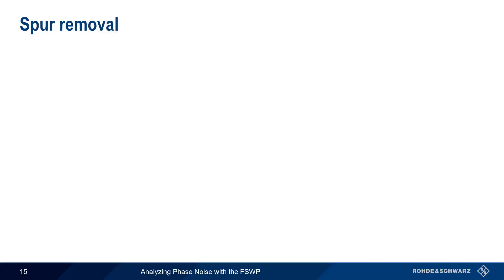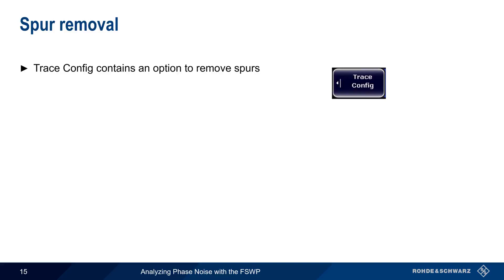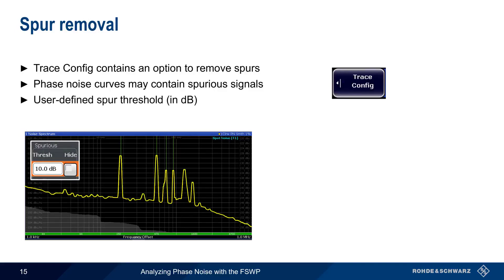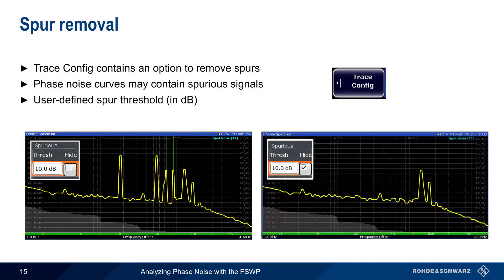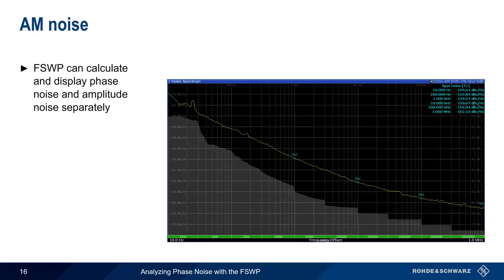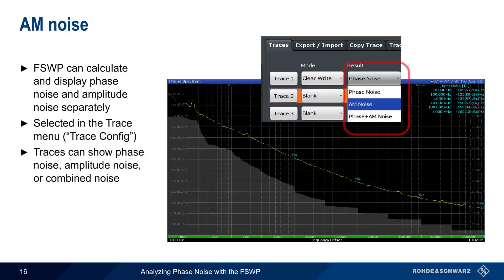Another display feature is spur removal, also enabled under Trace Config. Many phase noise curves contain spurious signals, which appear as peaks or spikes on the trace. Spurious signals are caused by interfering signals, not by phase noise, so we often want to remove them from our results. This is done by defining a threshold in dB — enabling spur removal hides spurs which lie more than this number of dB above the trace. Additionally, the FSWP can separate phase noise and amplitude noise and display either the combined result or plot them separately, selectable via the Trace Config menu.